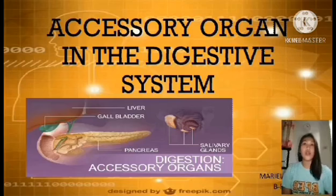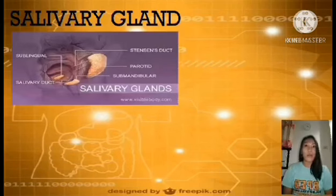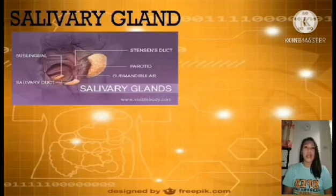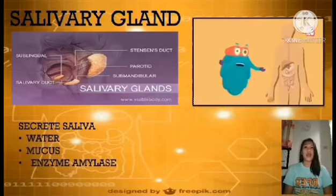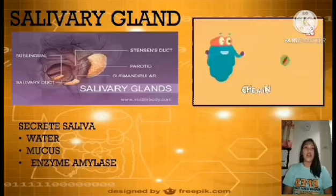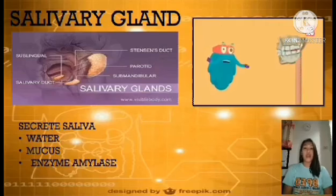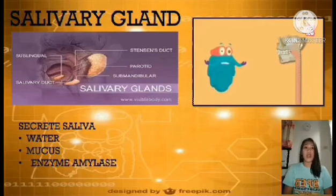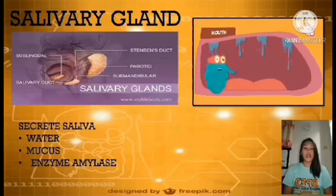Let's talk about salivary glands. There are three pairs of major salivary glands: first is the parotid, submandibular, and sublingual glands. Salivary glands secrete saliva that is composed of water, mucus, enzymes, and amylase. Saliva also moistens and lubricates food during mastication for easy swallowing. Saliva has enzymes that help food particles break down into smaller pieces.